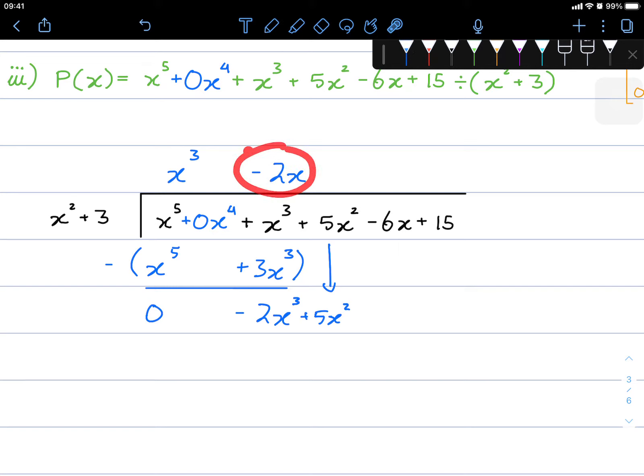Multiplying negative 2x times x squared. That will give us negative 2x cubed. Here's another peculiar thing that might happen. Negative 2x times 3 is going to be negative 6x.